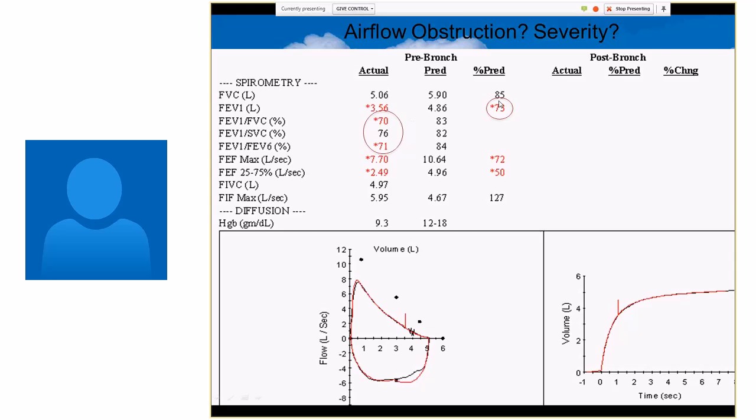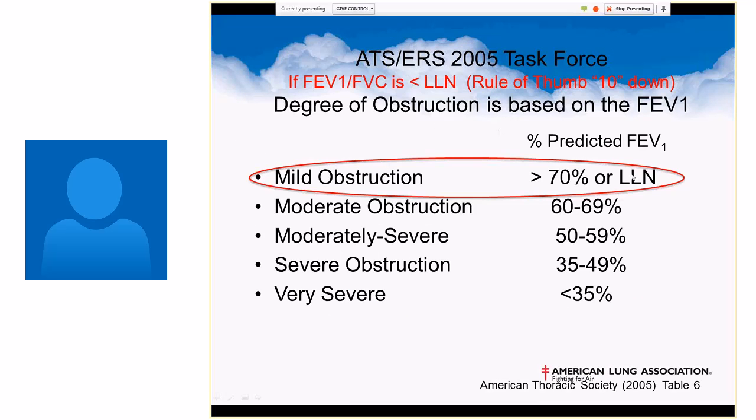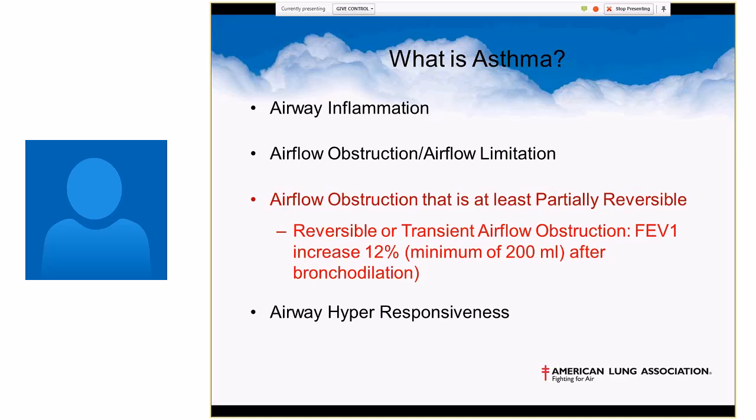My computers are sophisticated enough to highlight things below the lower limits of normal. It's highlighted in red with a little asterisk next to it. We already determined it was a good blow. We had good volume time curve and a good flow volume loop. Once we determine if the patient has airflow obstruction, then we need to decide what is severity. Severity is always related to the FEV1 in all diseases that we talk about. In this case, the FEV1 is 73%. The ratio determines if a patient has obstruction. The FEV1 determines the severity of said obstruction. According to this scale, the patient has a mild airflow obstruction.